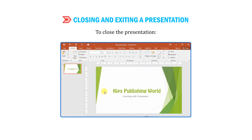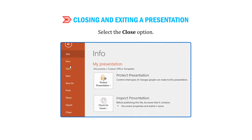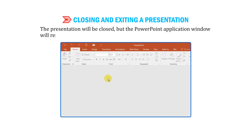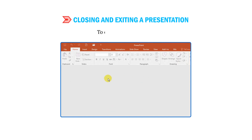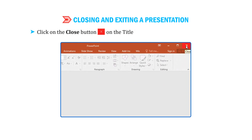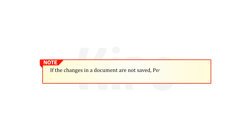Let us learn how to close and exit a presentation. To close the presentation, click on the File tab and select the Close option. The presentation will be closed, but the PowerPoint application window will remain open. To exit the presentation, click on the Close button on the title bar or use Alt plus F4 key combination. If the changes in a document are not saved, PowerPoint 2016 will prompt you to save the changes. You should close the document only after saving it.